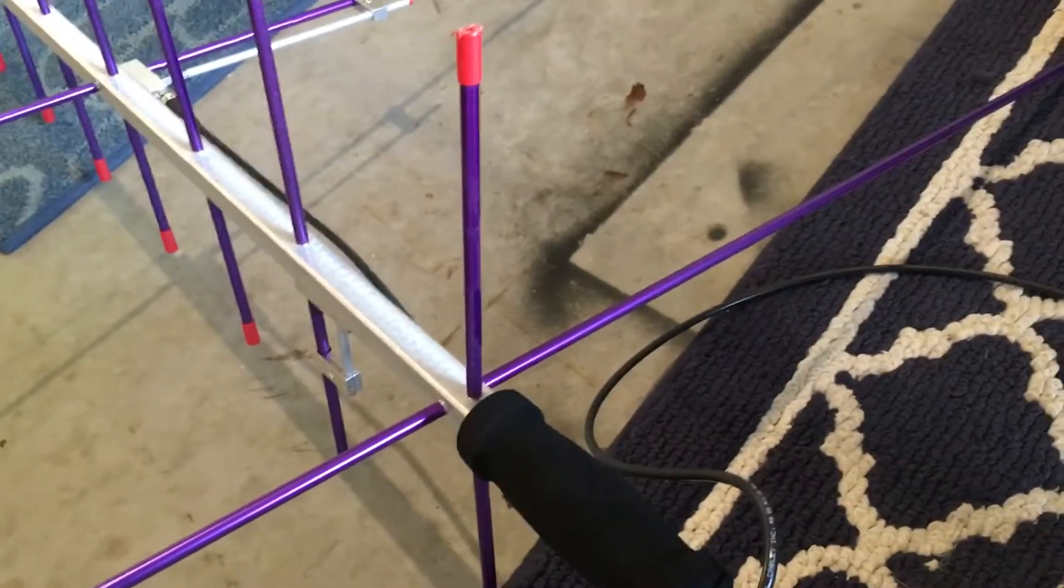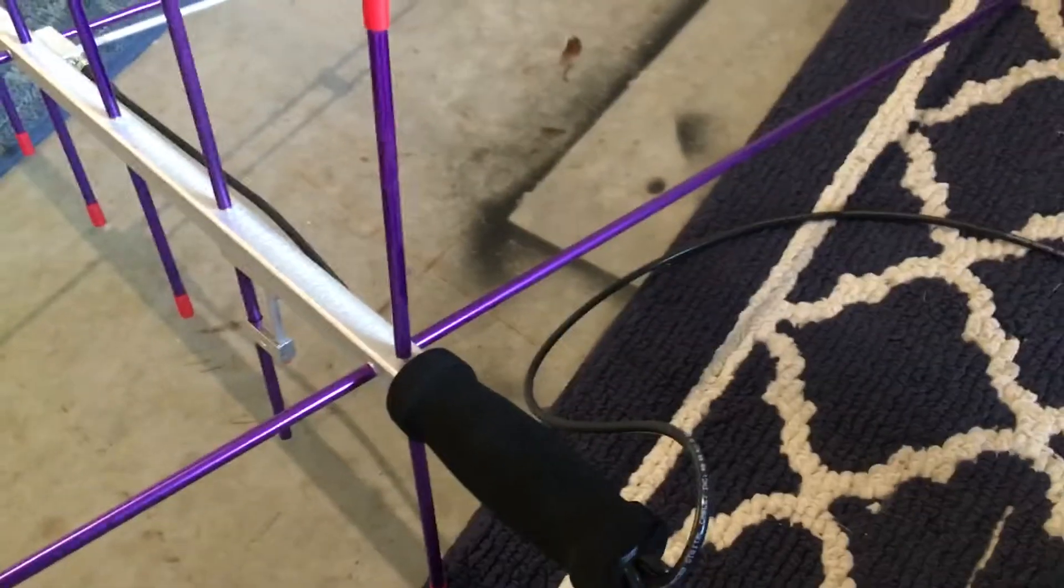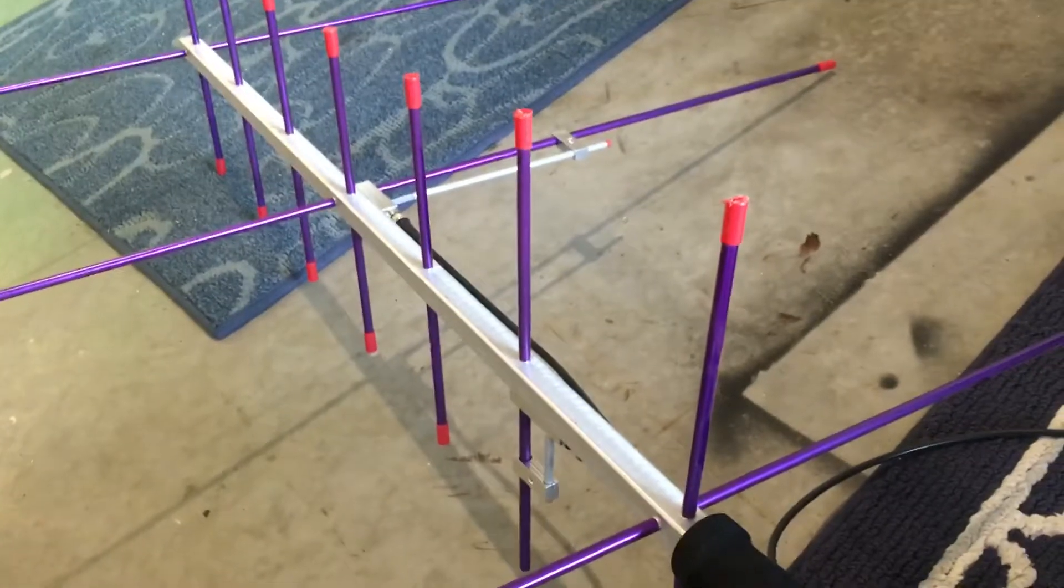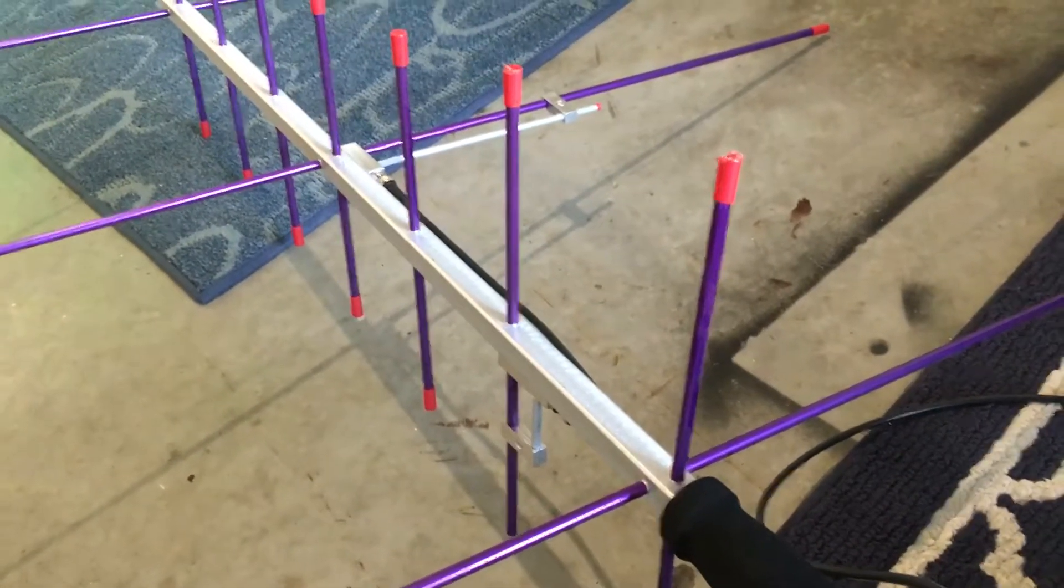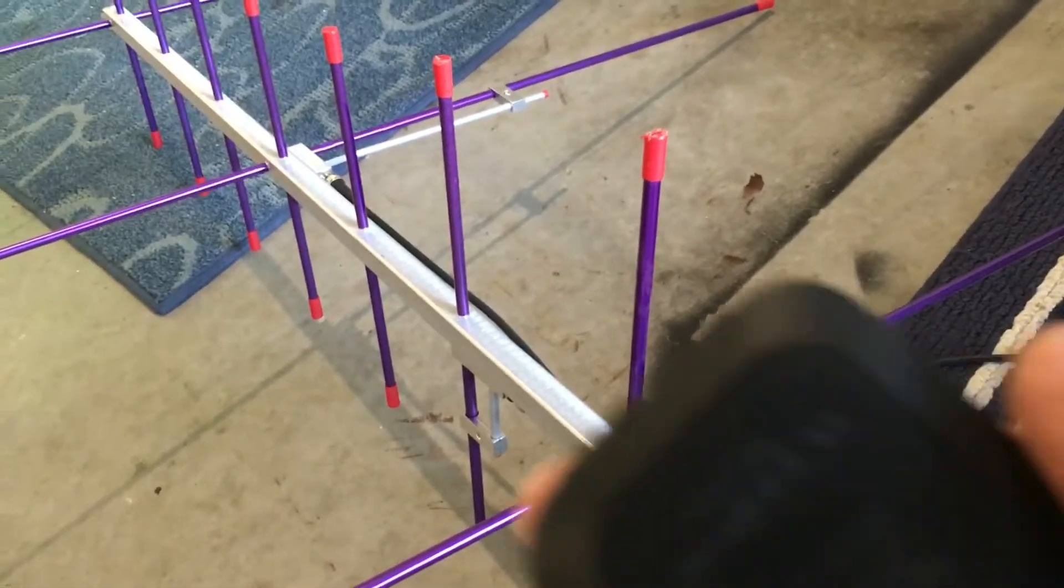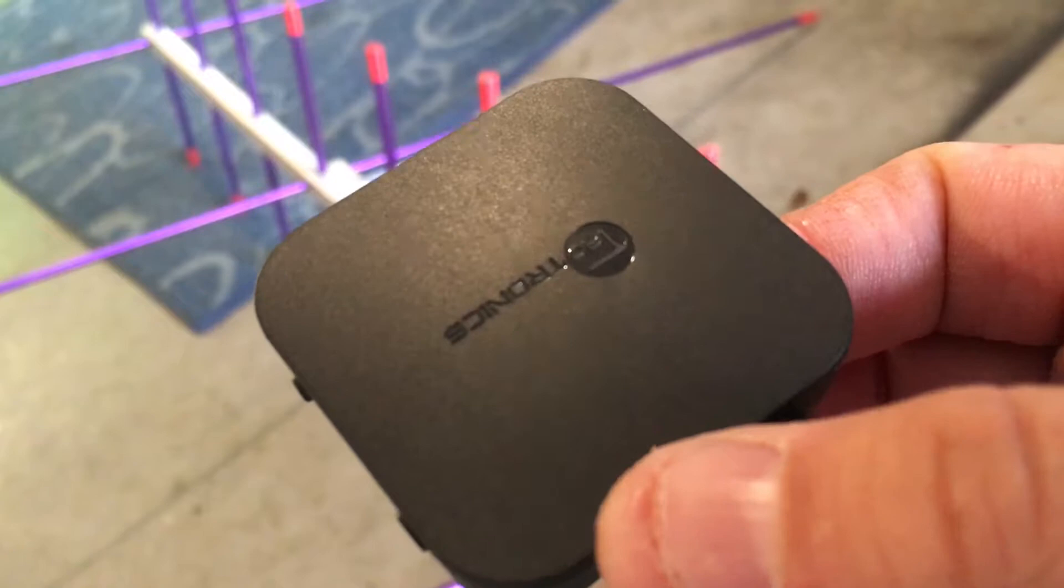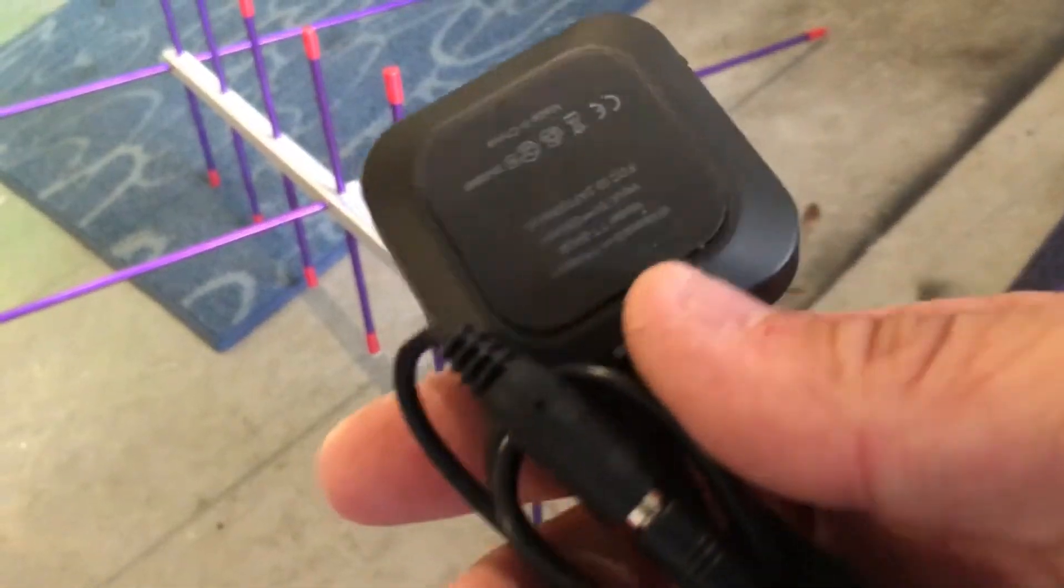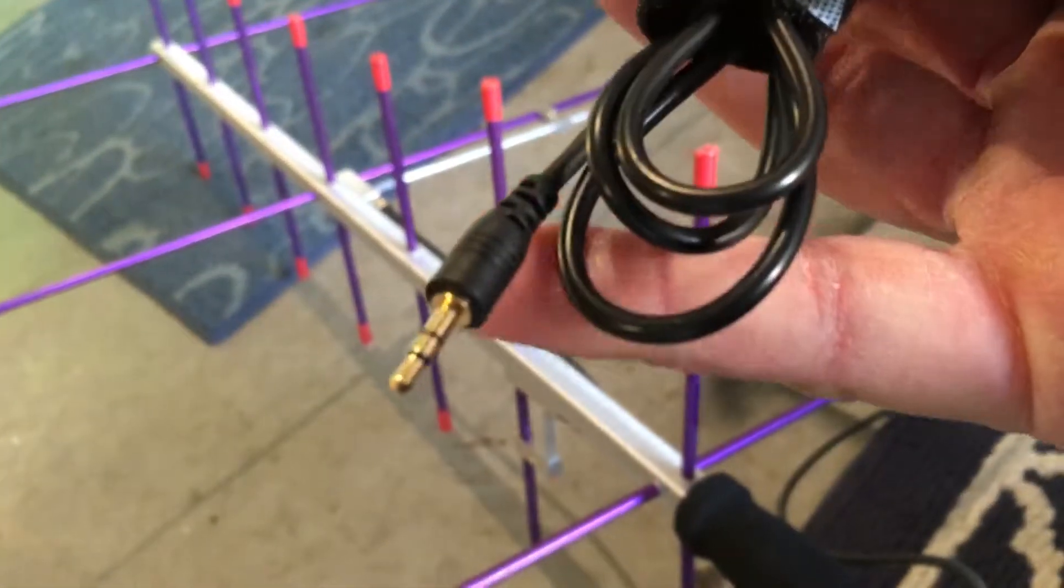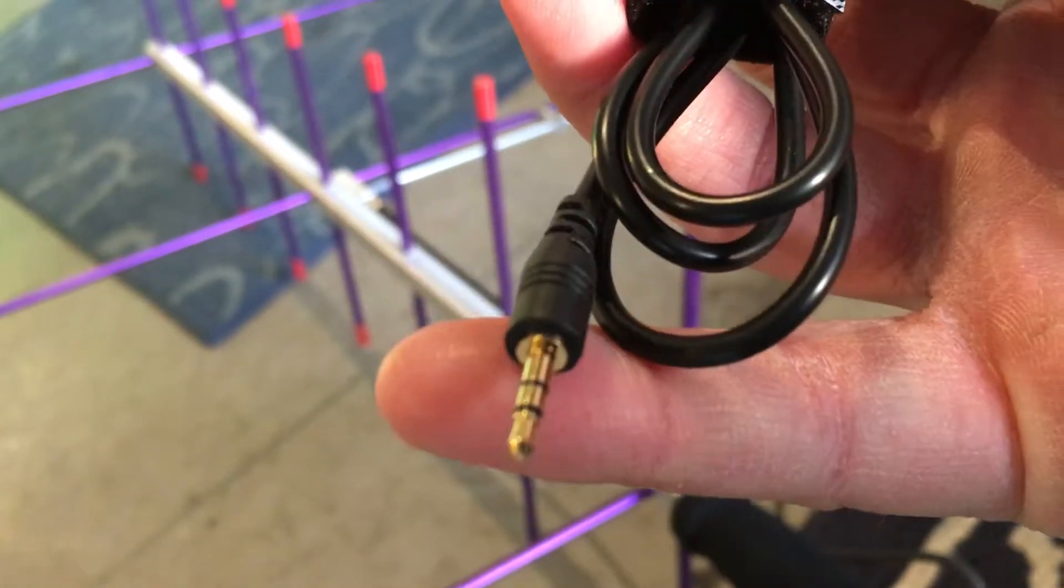All right YouTube, just gonna do a quick video here. If you ever work ham radio satellites, this is a nice little thing I use. It's a Bluetooth device that I plug into my radio. This is the 2.5 millimeter plug.